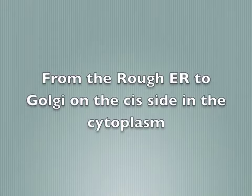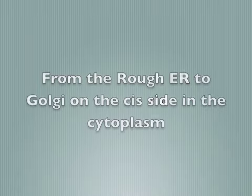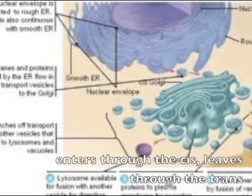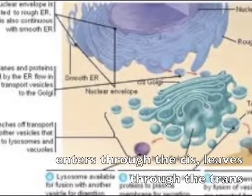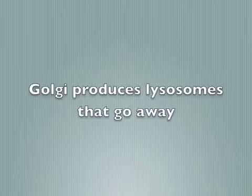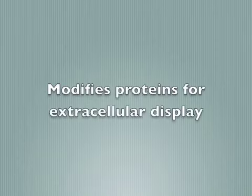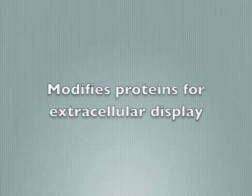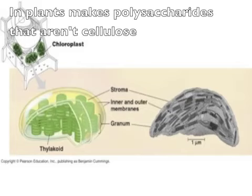Transport goes from the rough ER to the Golgi on the cis side facing the cytoplasm. The Golgi produces lysosomes and modifies proteins for extracellular display. In plant cells, it also produces polysaccharides other than cellulose to provide structural support.